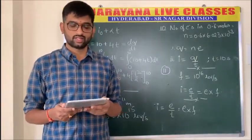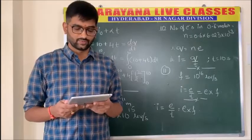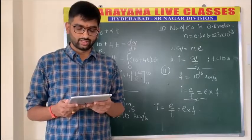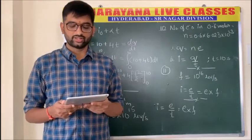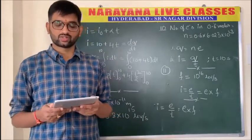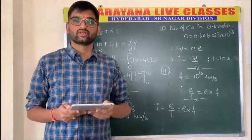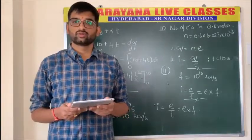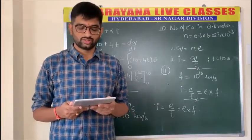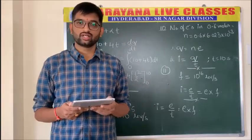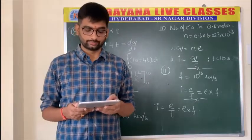Problem number nine: electric current is generated by — out of the given devices, a dynamo is the device used to generate electric current.